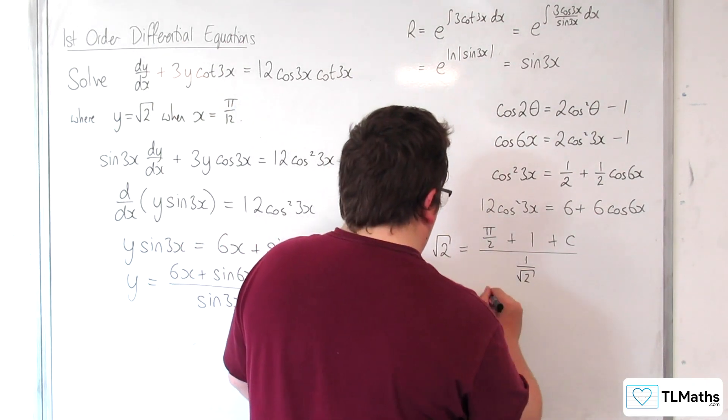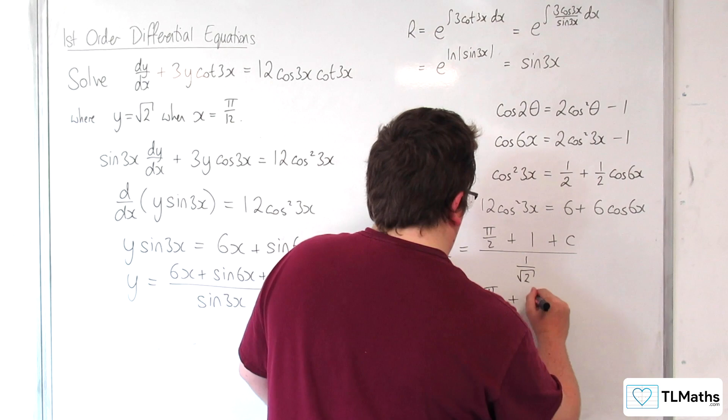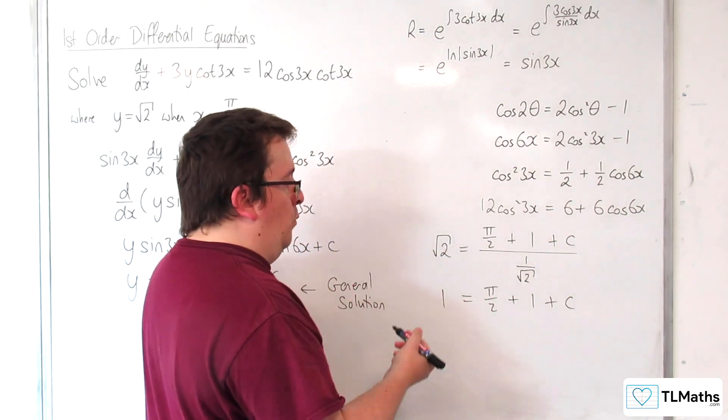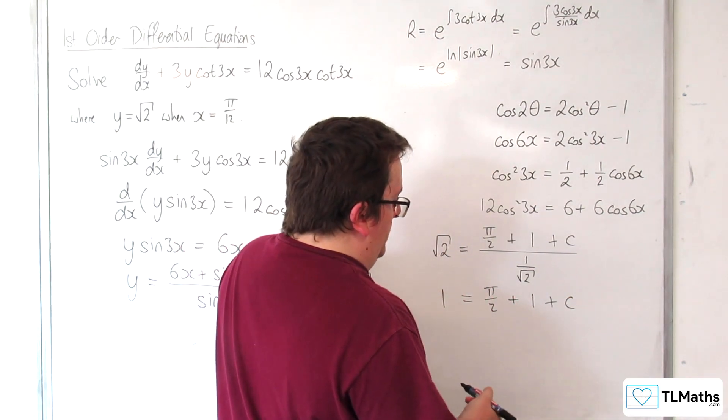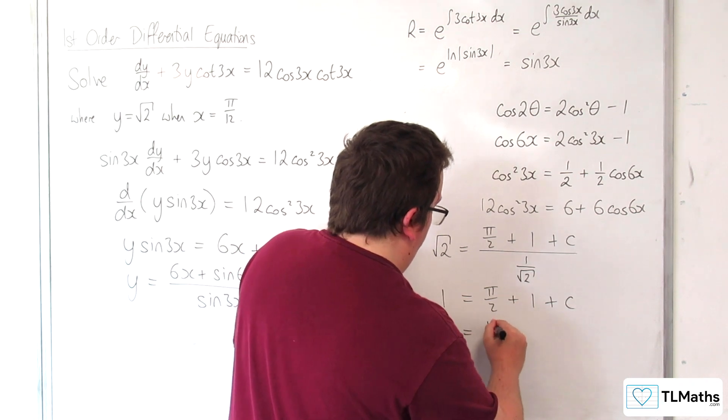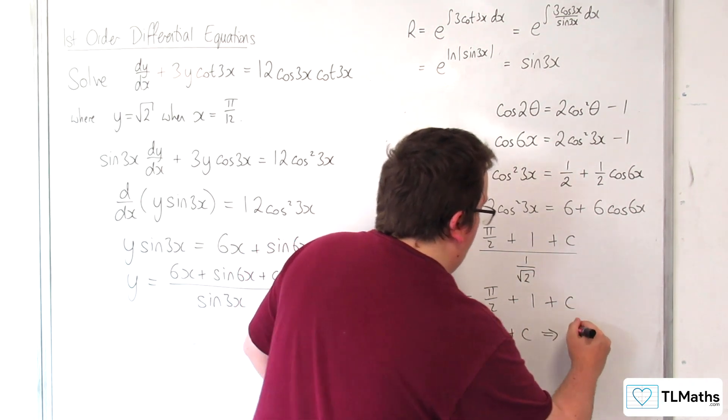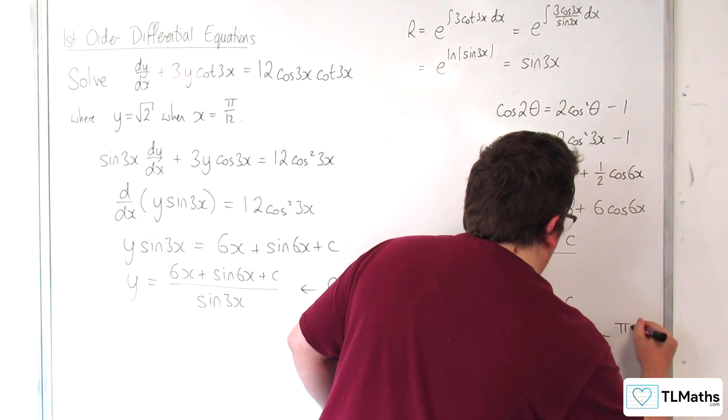Subtract 1 from both sides. So I get 0 is equal to pi over 2 plus c, which means that c is equal to minus pi over 2.